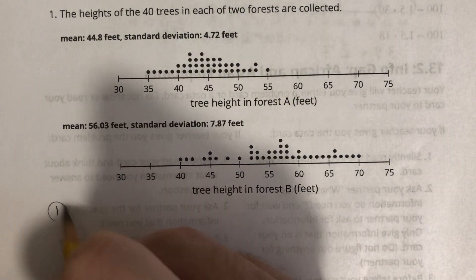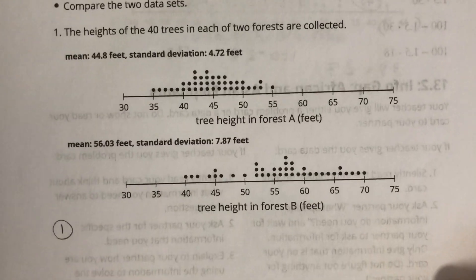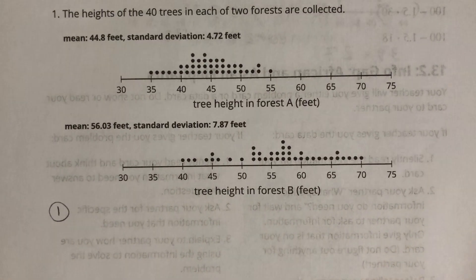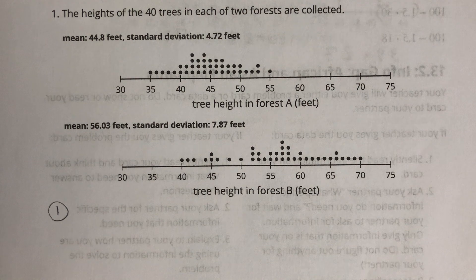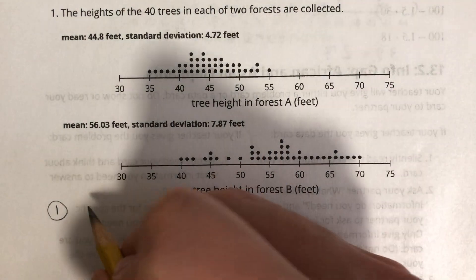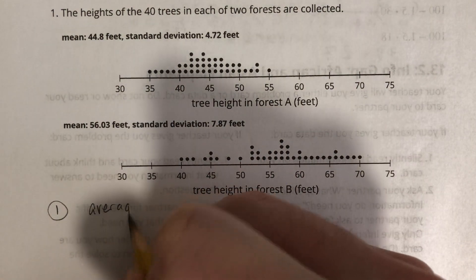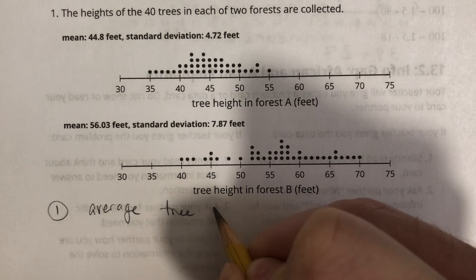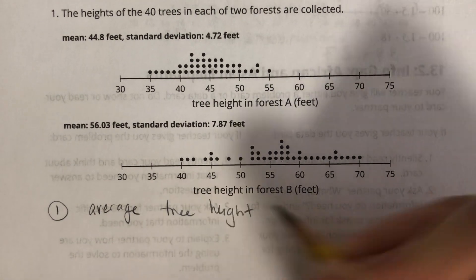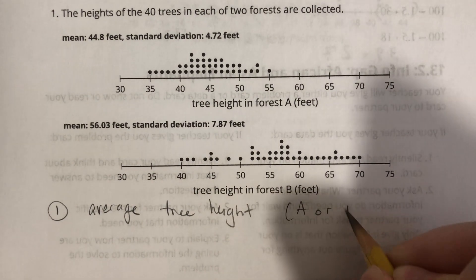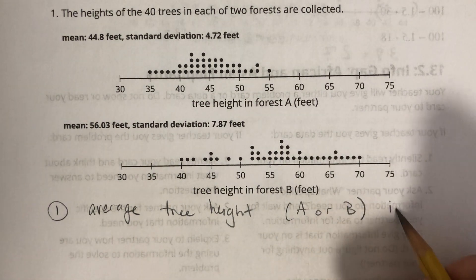So what does this mean mean? That's what they mean when they say the measure of center. So mean is average, so really it's just whatever the average of the units in the graph are. So average tree height in forest A or B, and that would be in feet.